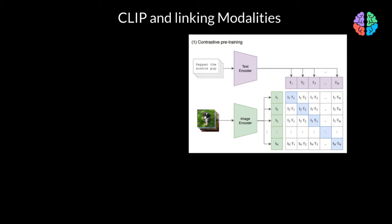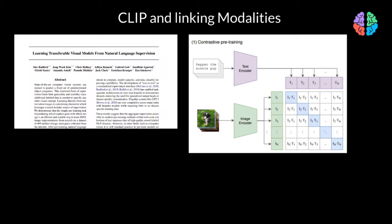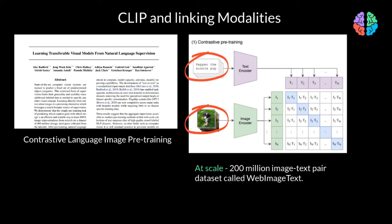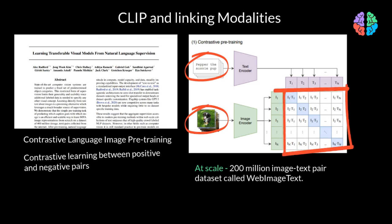The idea of linking or connecting modalities at scale using web-scale data was established in CLIP, which stands for Contrastive Language Image Pre-Training. CLIP takes text prompts and images as input and connects them semantically. It does this at web scale by training on 200 million image-text paired datasets called Web Image Texts, which were fully gathered from the web without any manual labeling. CLIP introduced contrastive learning, which is to distinguish between positive pairing of image and text versus negative pairing of image and text.